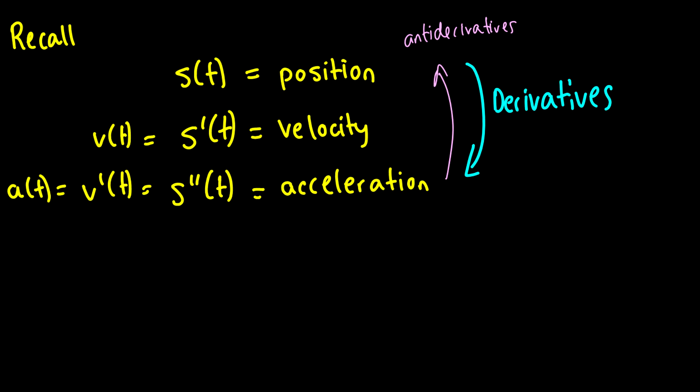What you might be thinking, is you say, well, okay, if we take the antiderivative of a(t), we get v(t) plus some constant.